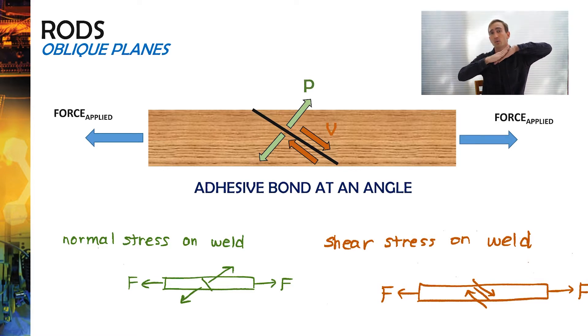So shear stress is when the two pieces of the weld slide to each other, and normal stress on the weld is if they pop off. The rod itself can still fail in regular normal and be stretched out in the case where the weld is actually stronger than the material itself.